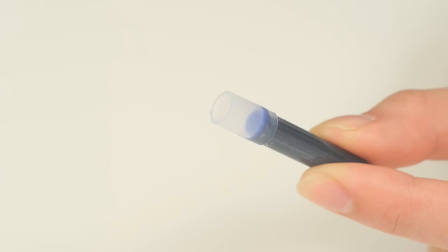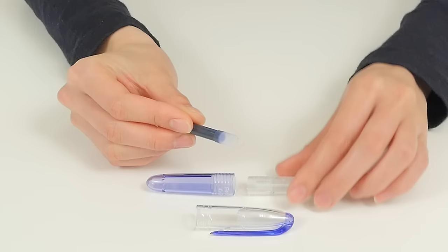Once you've removed the cap, insert the wide end of the cartridge into the grip section of your pen. Press it in firmly until you feel the cartridge puncture.